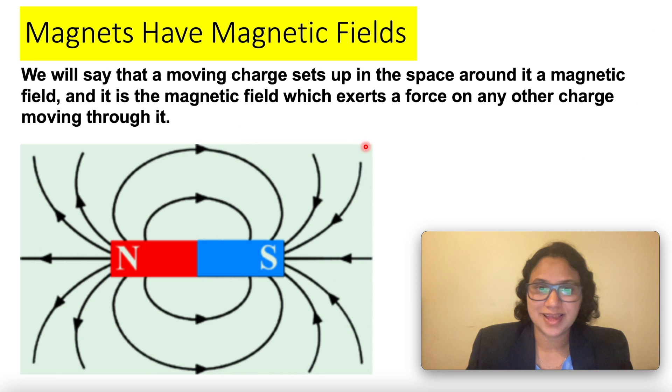Magnets have magnetic fields. What does that mean? The magnetic field is the invisible area around a magnetic object that can pull another magnetic object towards it or push another magnetic object away from it.